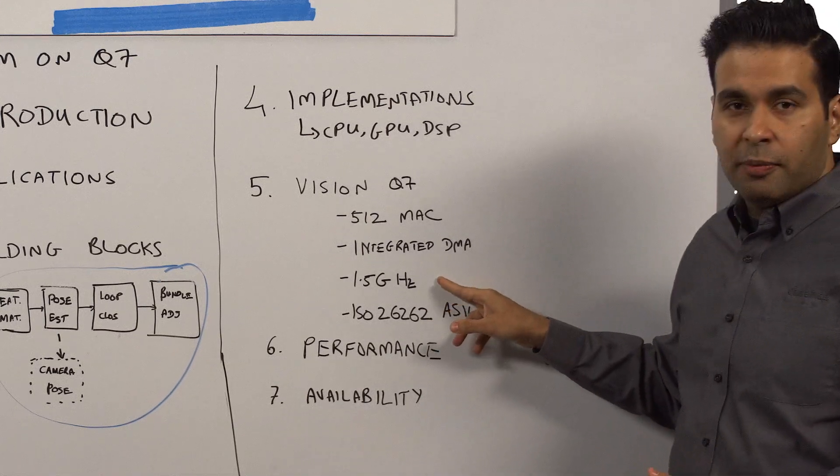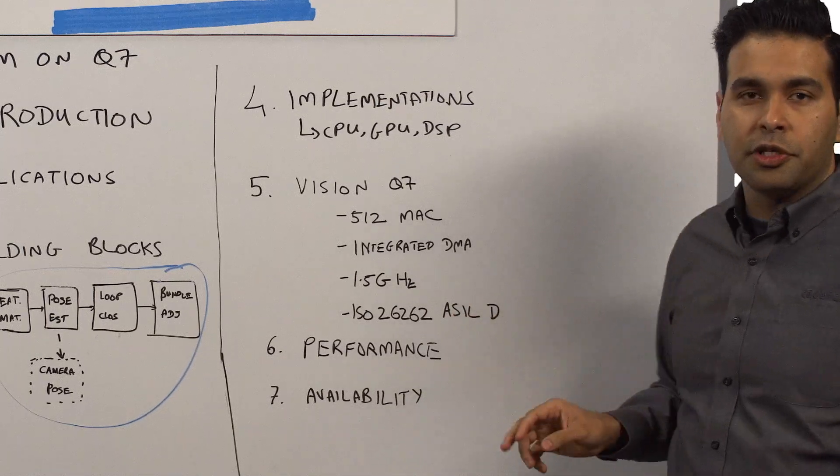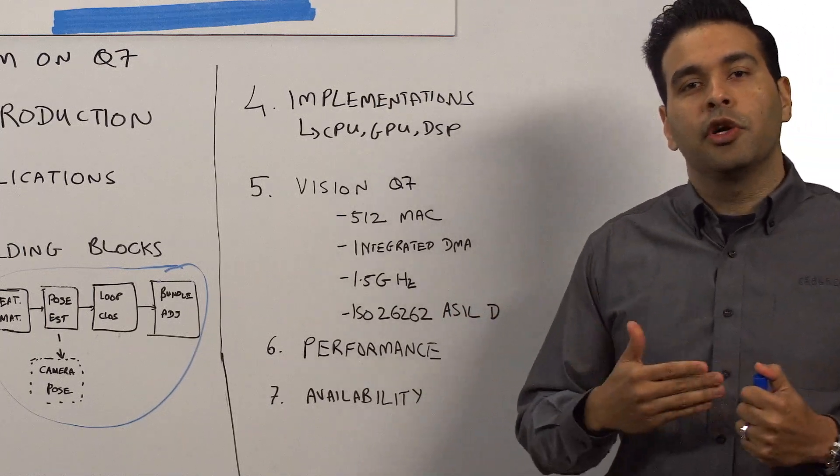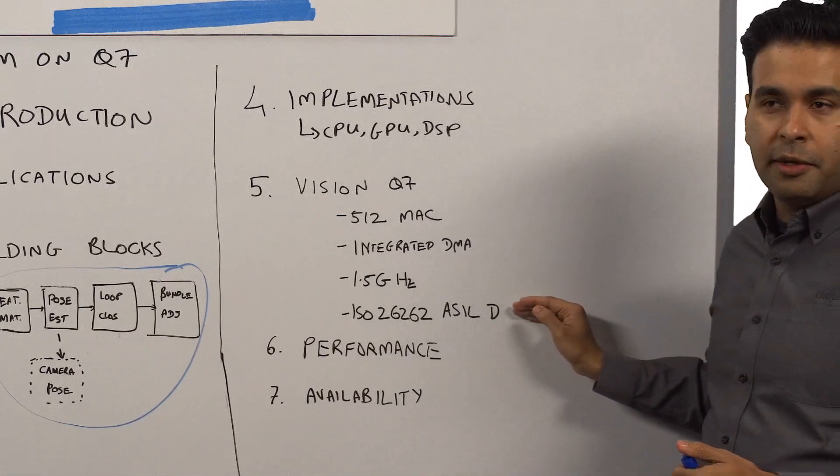It can achieve a clock speed of about 1.5 GHz, and is also designed for ISO 26262 ASLD. So, if you're targeting vehicular or automotive applications, the Q7 is a great platform.